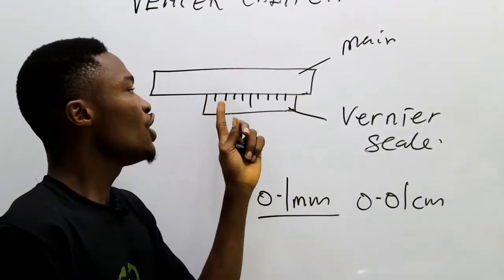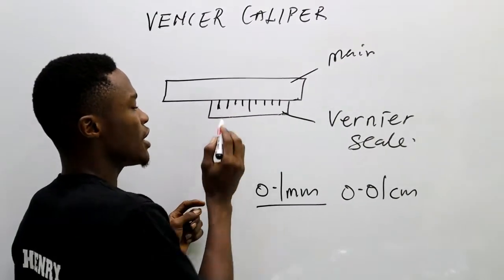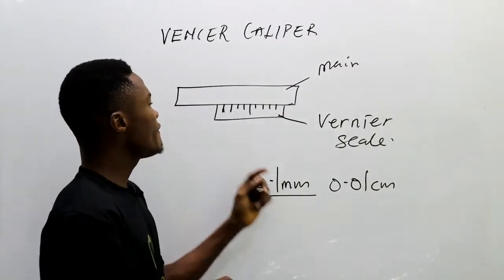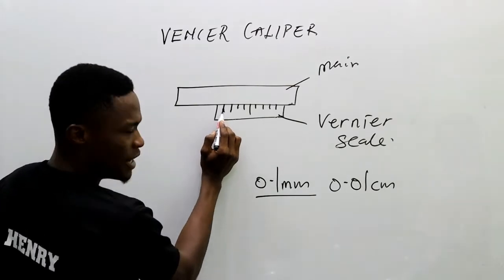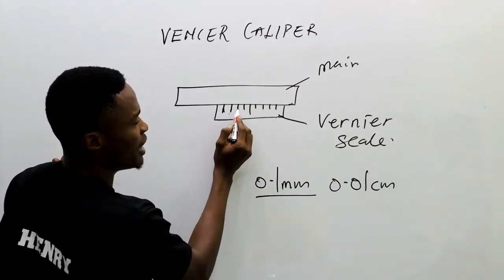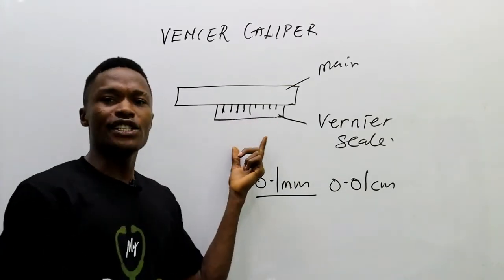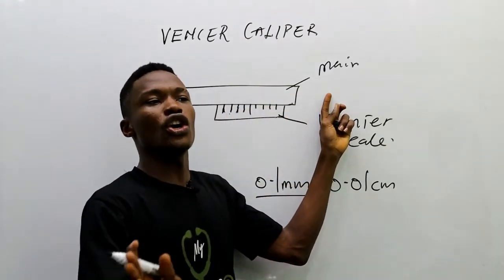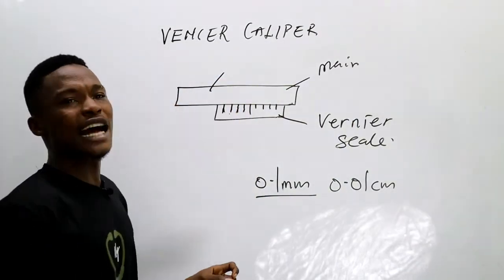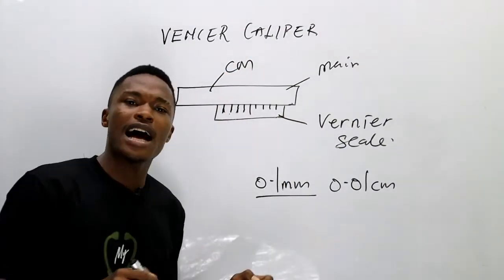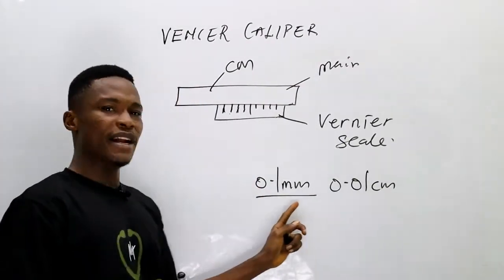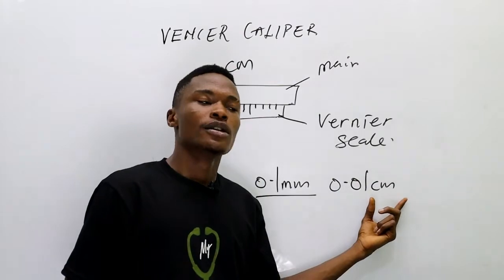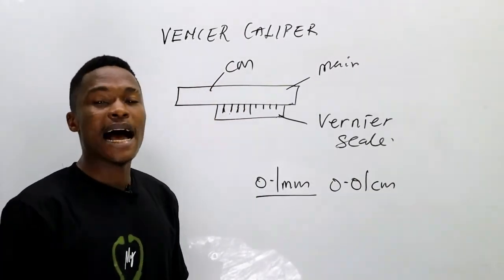Each line or division on the vernier scale has a value of 0.01 centimeters or 0.1 millimeters. So the divisions read: 0.1 mm, 0.2 mm, 0.3 mm, 0.4 mm, 0.5 mm, and so on. The main scale is graduated in centimeters, just like a normal meter rule, while the vernier scale gives millimeter readings that can also be converted back to centimeters.